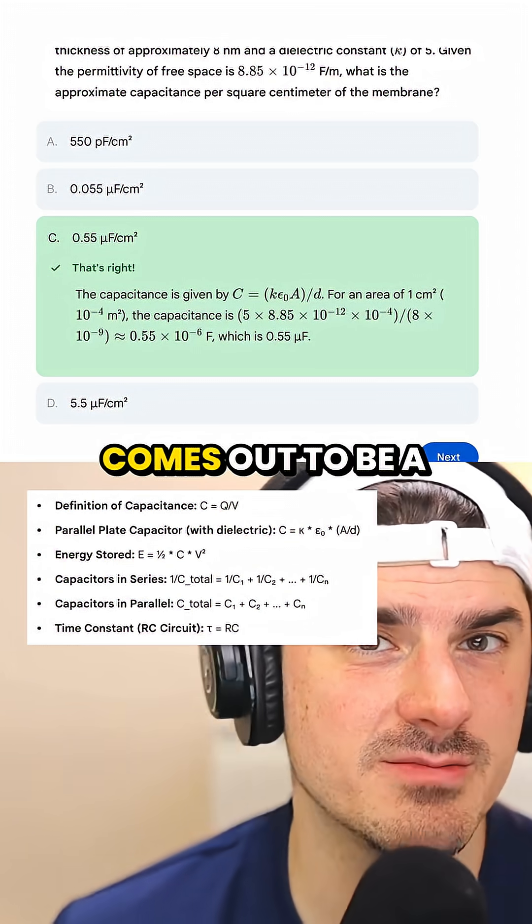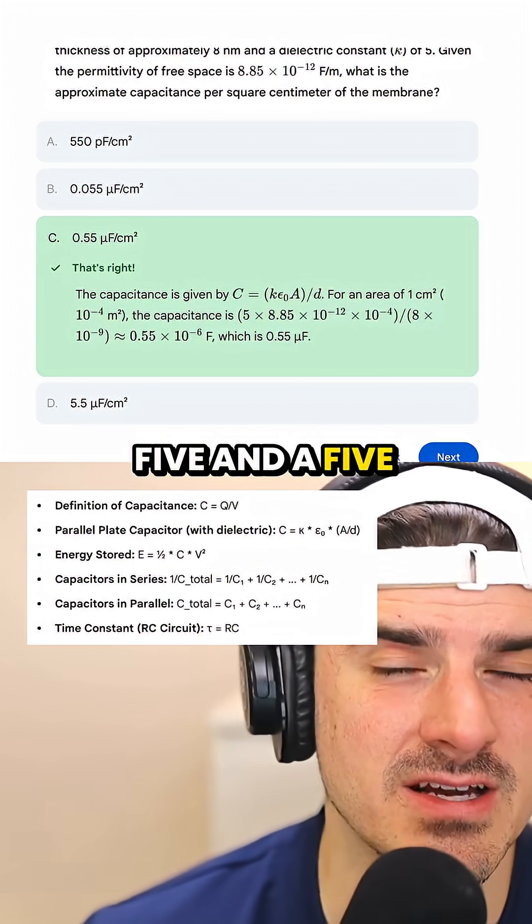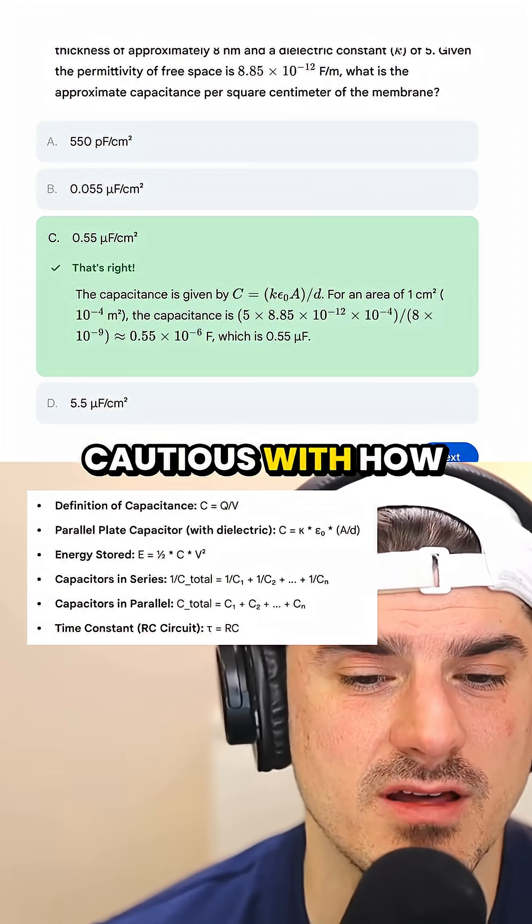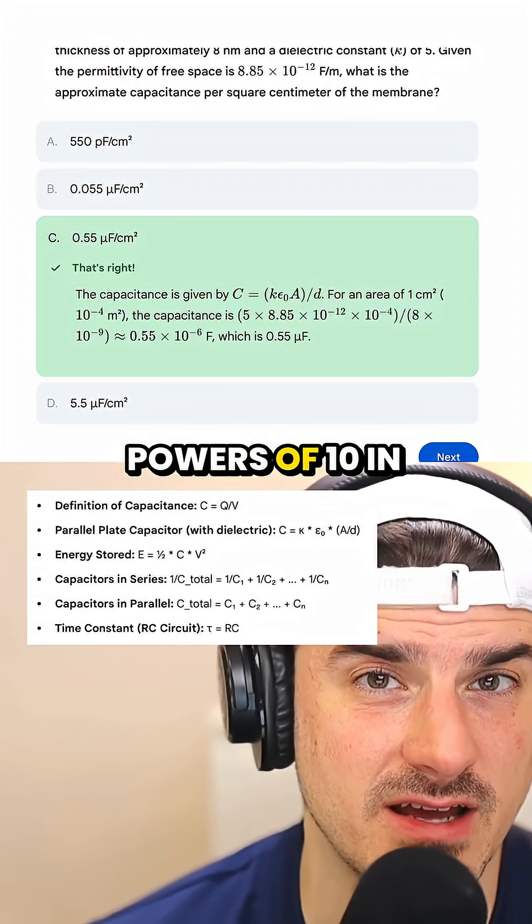Now the numerical value comes out to be a five and a five, and then people get lost on the powers of 10. So be really cautious with how you track your powers of 10 in this problem.